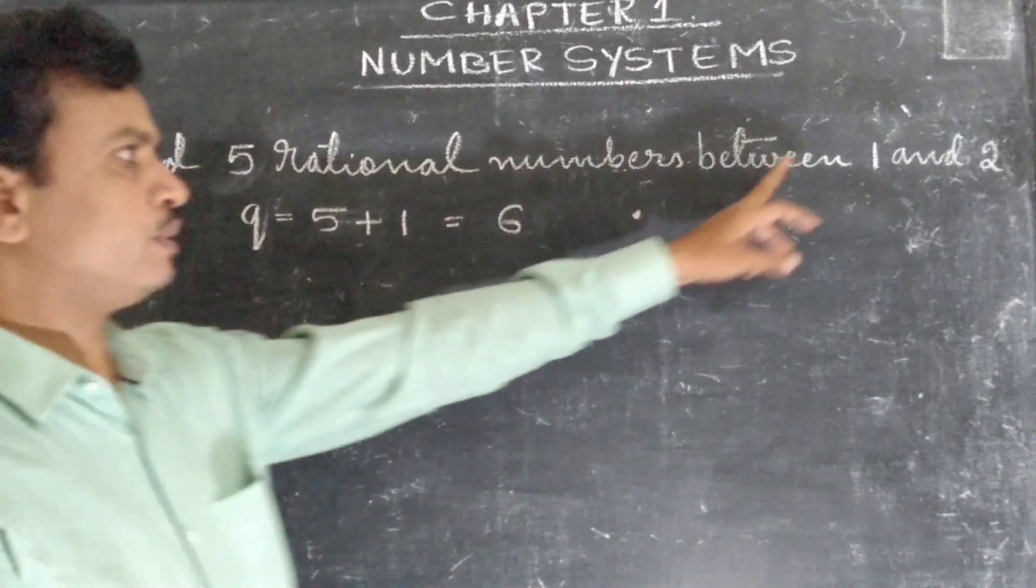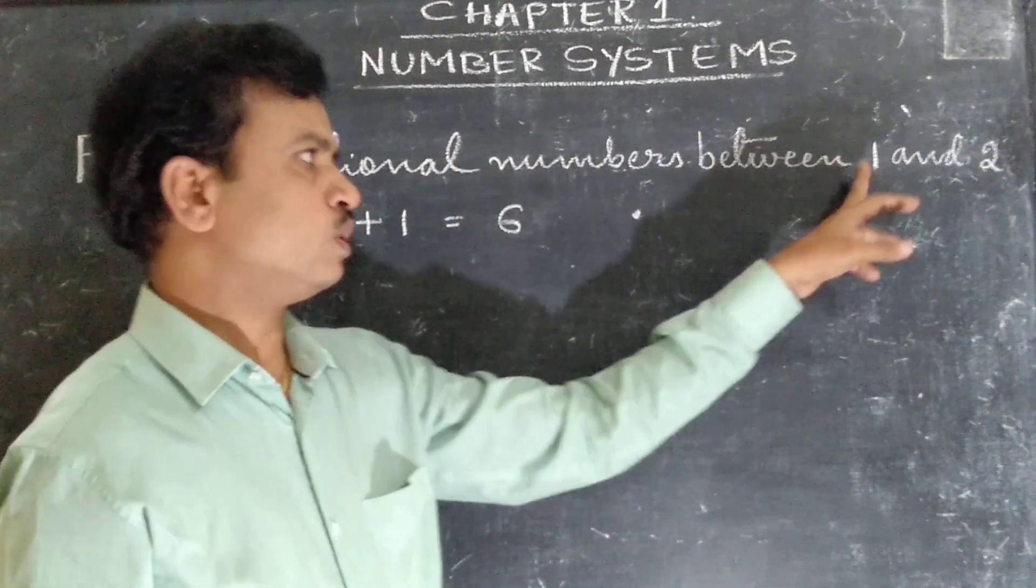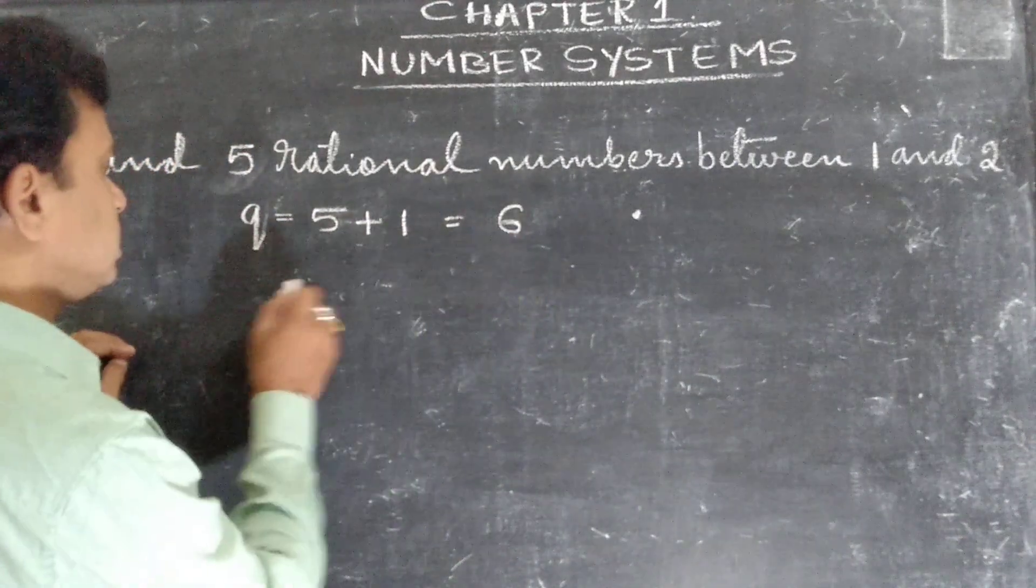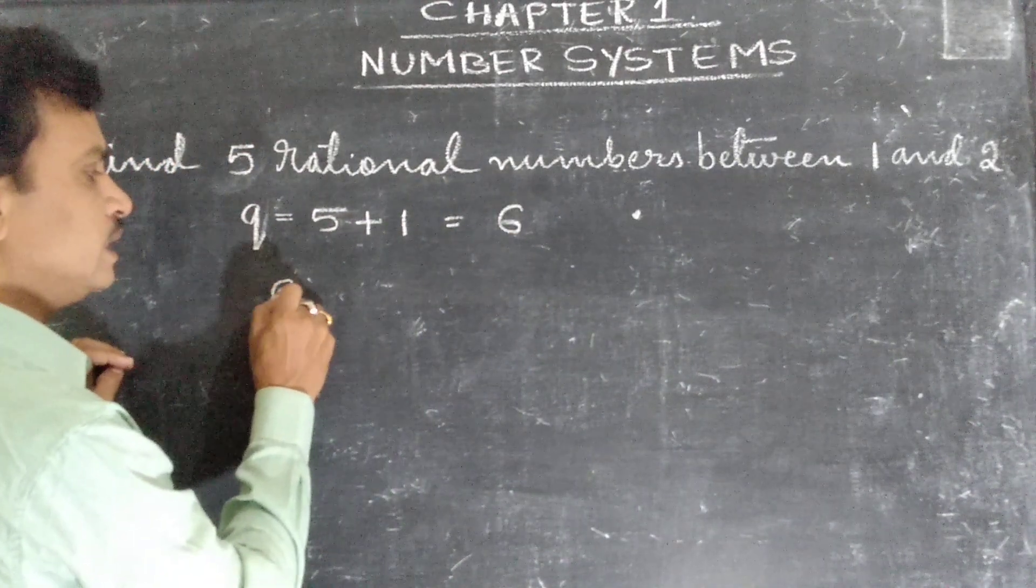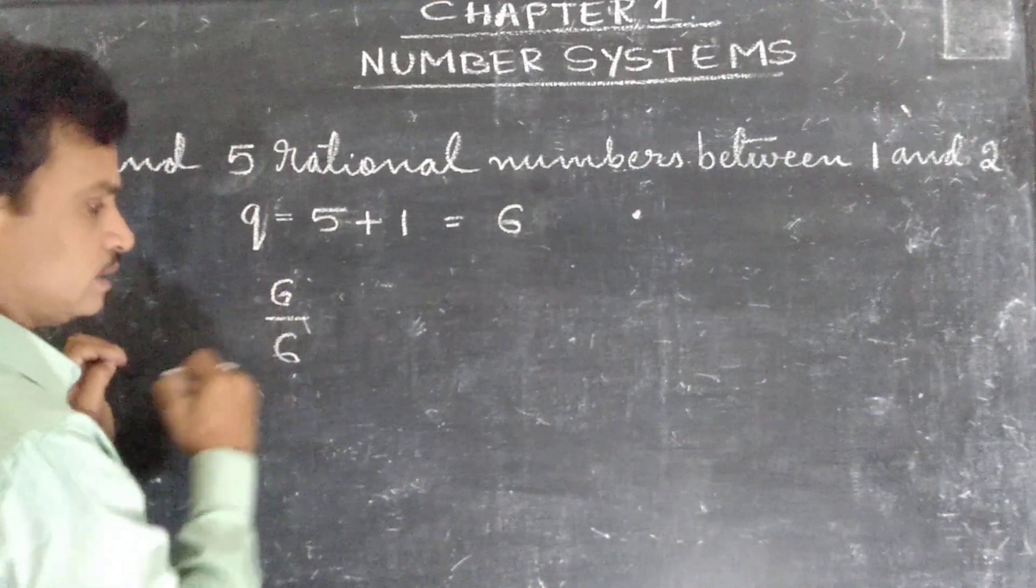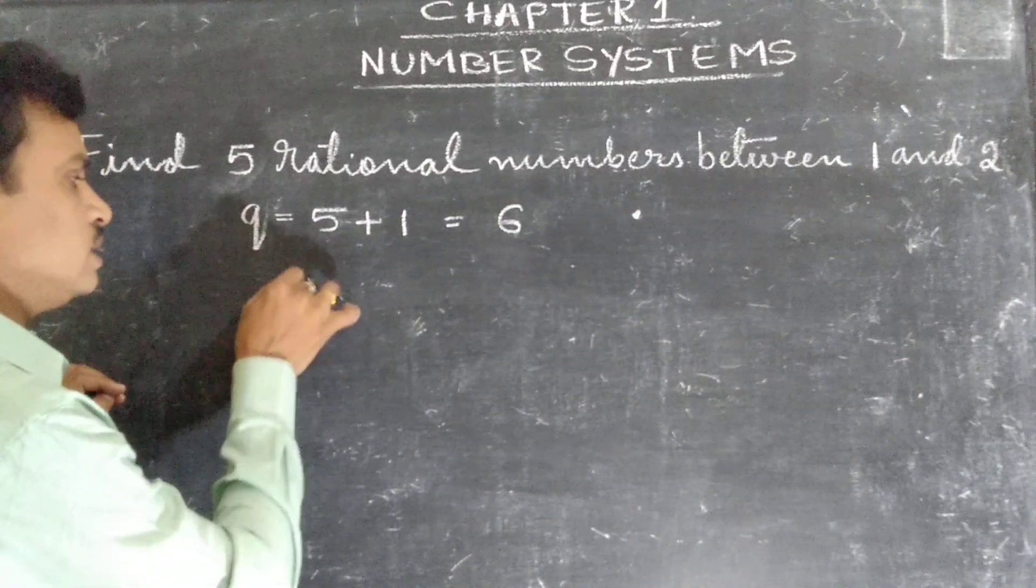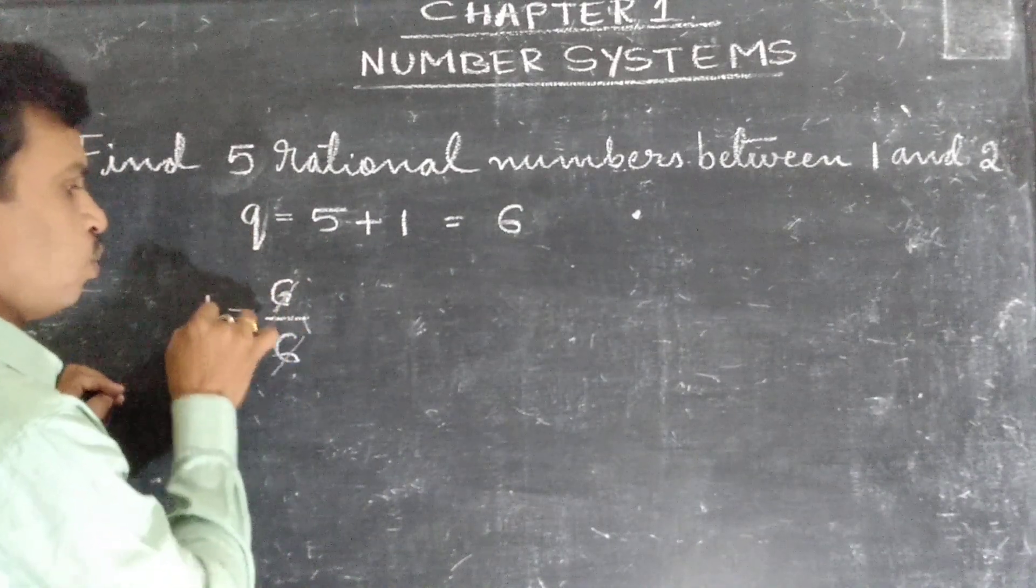Then next, in between 1 and 2. Now how will we get 1? Here we got 6. What should we do? 6 divided by 6. If you divide, 6 ones are 6. What is the answer here? 1.